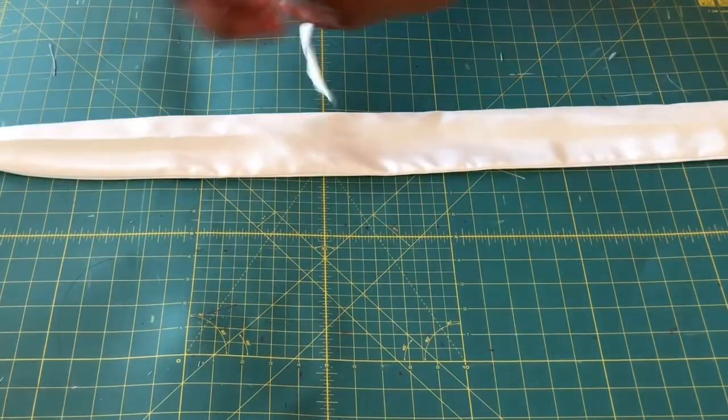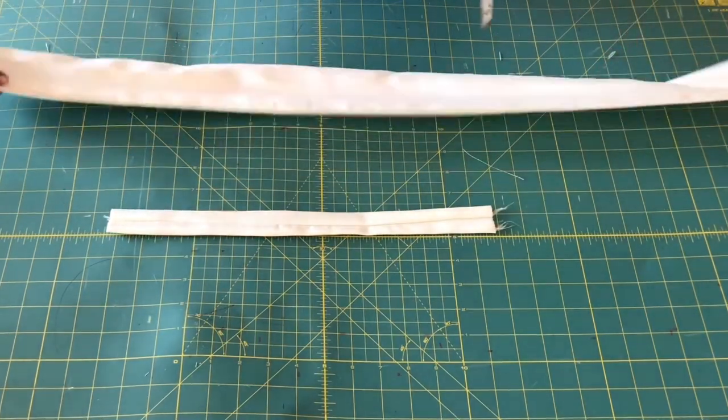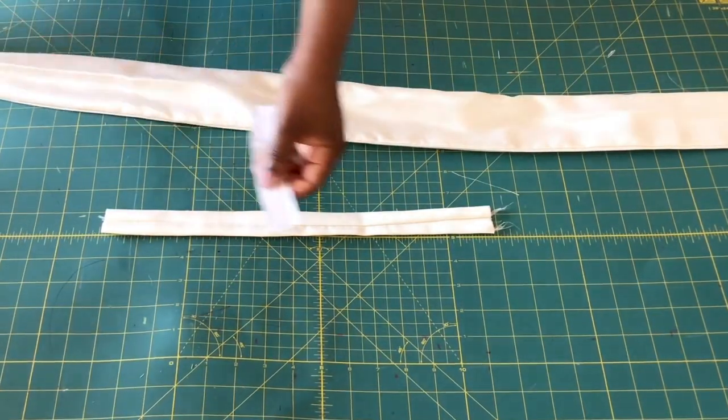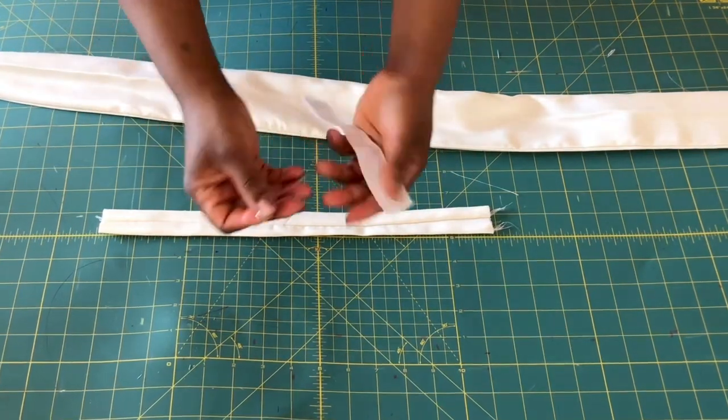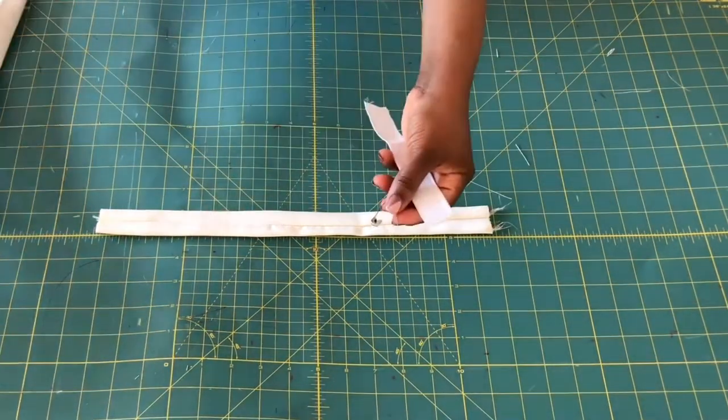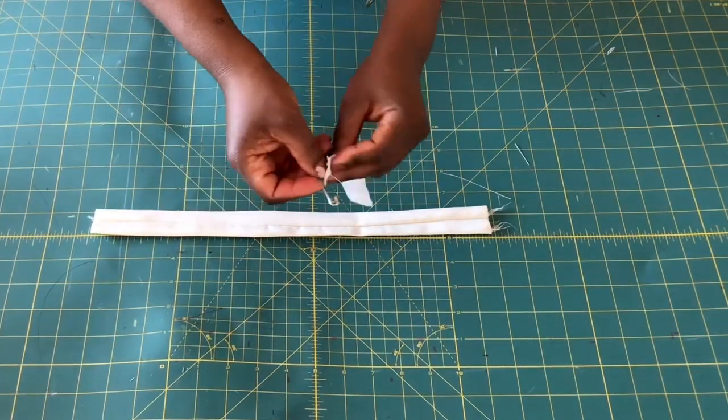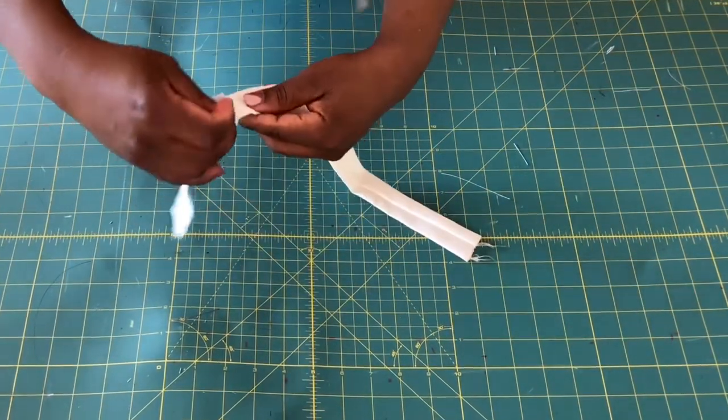Here is my ironed main fabric and also the elastic casing. Now I'm going to insert the elastic inside the elastic casing, and I'm going to use a safety pin to do that as well. Hook the pin on the elastic and pass it through the elastic casing like this.